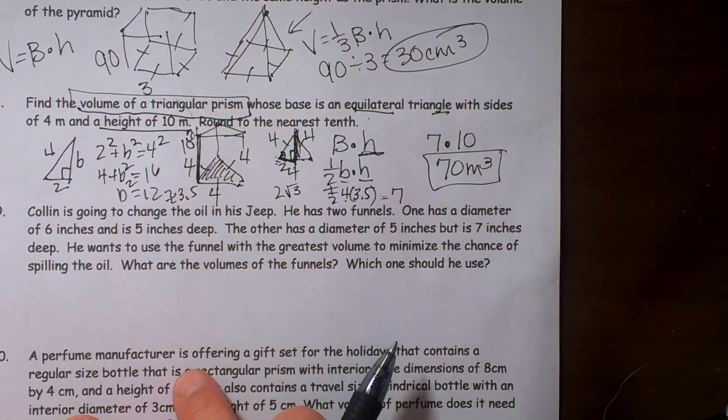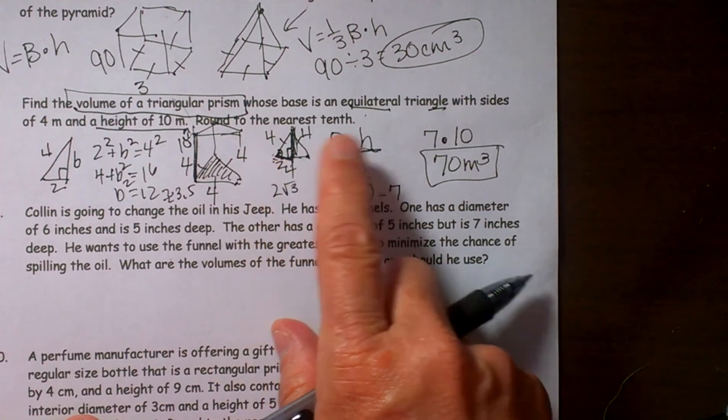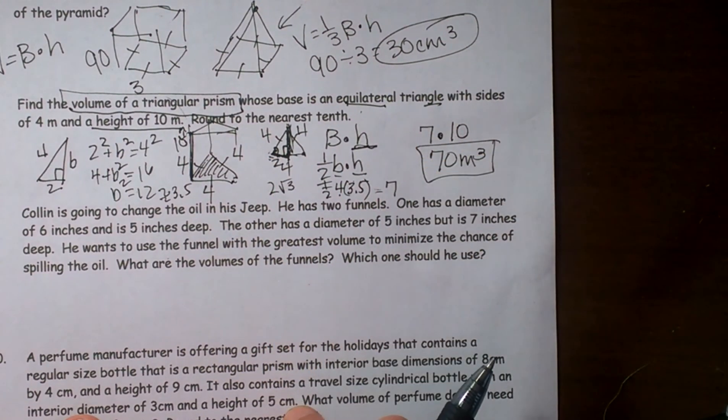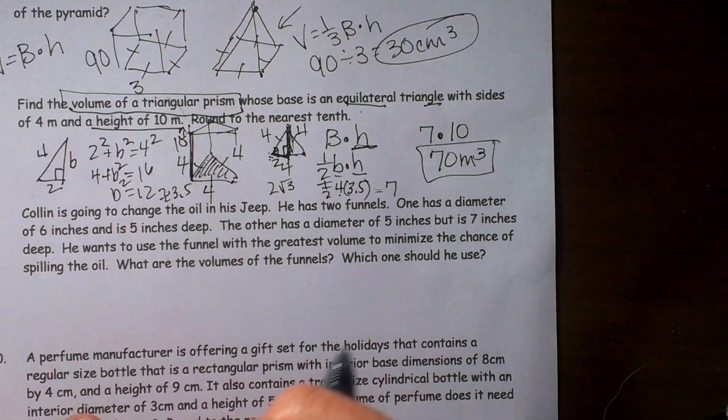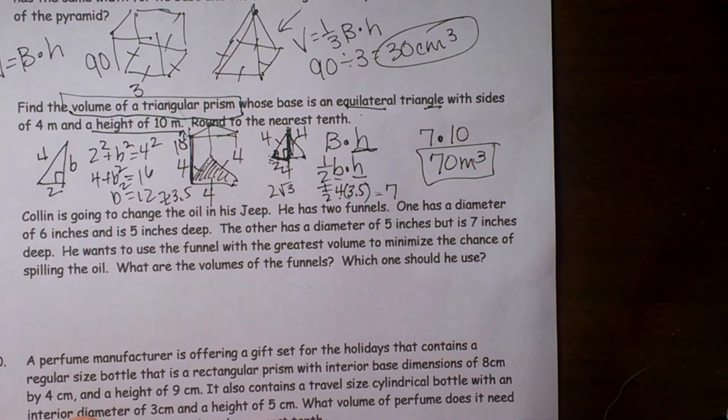Okay, so that is how you could draw a picture and label it and find the volume of the triangular prism. Hope this video was helpful. Thank you.